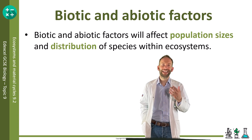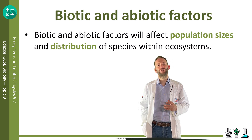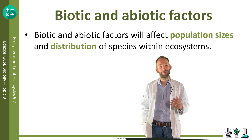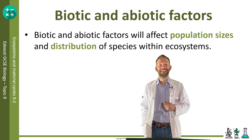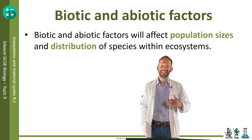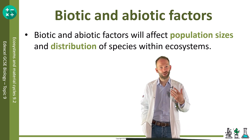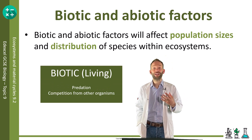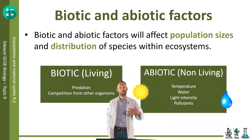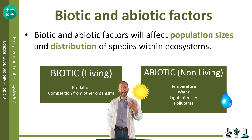Biotic and abiotic factors will affect population sizes and distribution of species within ecosystems. Biotic are living factors, things like predation and competition from other organisms. Abiotic are non-living factors, things like temperature, water, light intensity, and pollutants.